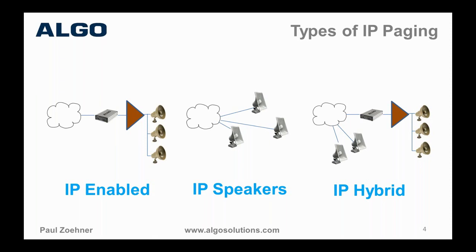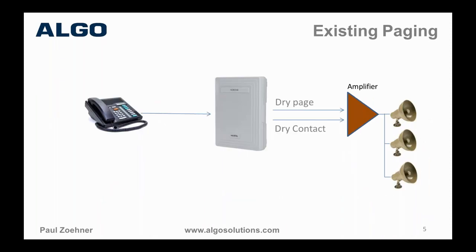We can support all of these environments and mix and match — a combination of existing infrastructure as well as new technology. Nortel Networks made a phone system called NorStar and BCM, probably one of the most popular phone systems in the world at the time. The way that worked for paging was a dry page port — dry audio, meaning no DC on the wire pair — and a dry contact to either mute the music or activate the amplifier.